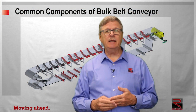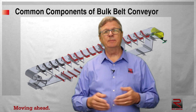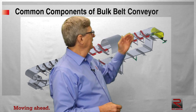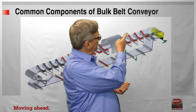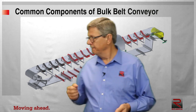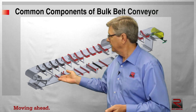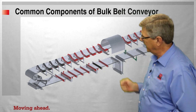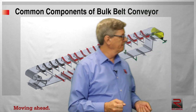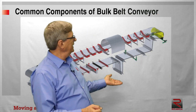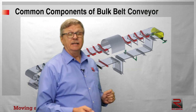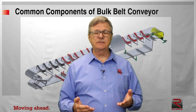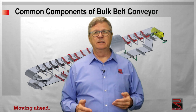This drawing shows the common components included on a typical bulk handling belt conveyor, including head pulley, snub pulley, flat belt, tail pulley, carrying idlers, return idlers, a belt plow, counterweighted take-up, and belt cleaner. The drawing does not include items such as loading skirts, hopper feeder, and slider bed.